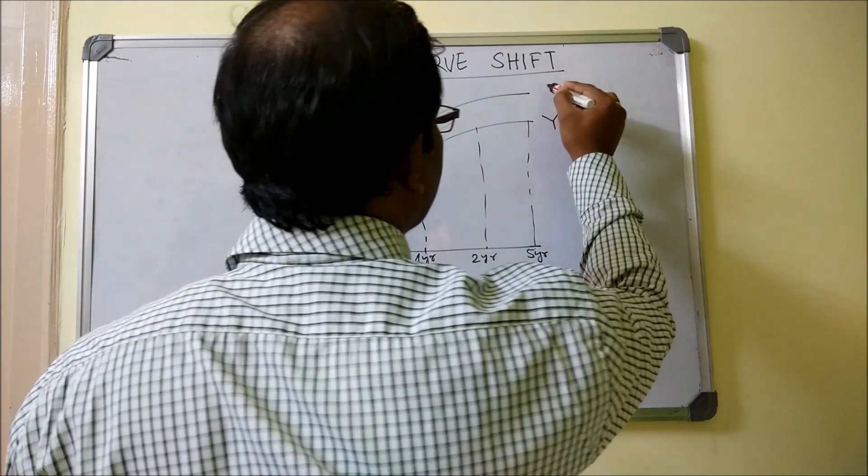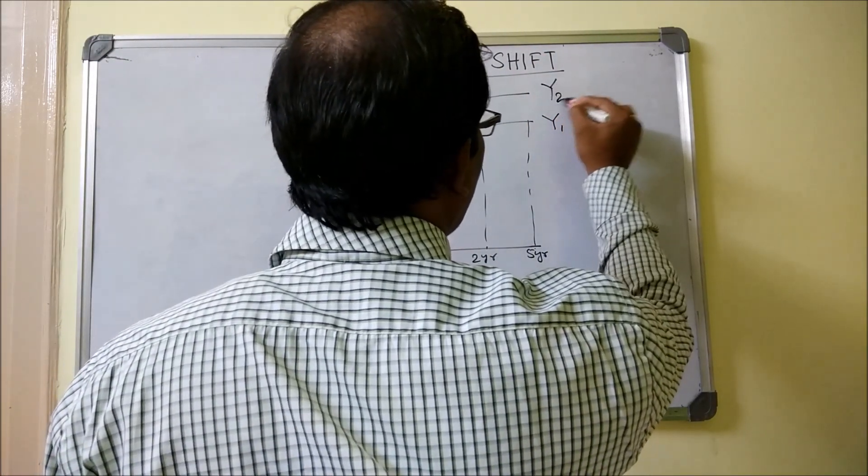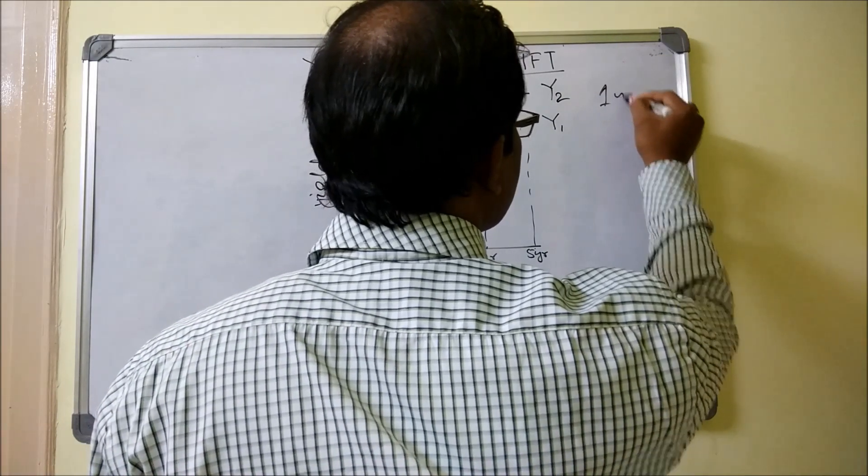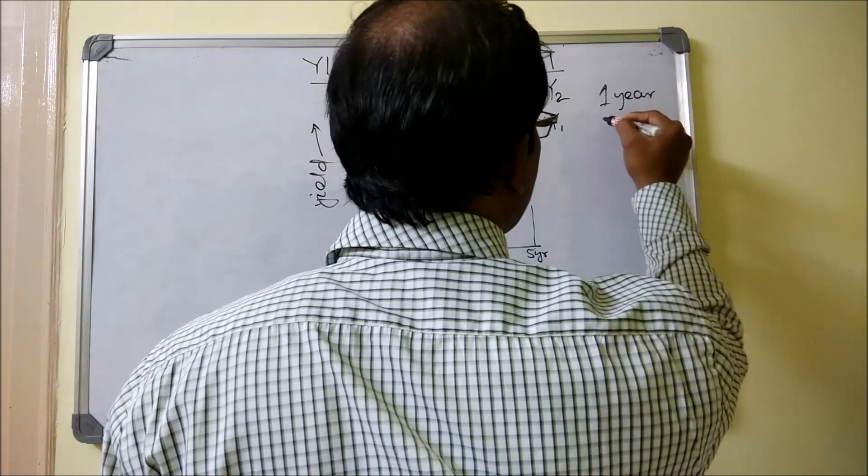I am drawing another yield curve. Let's say one year down the line we have something like this. So you have Y2 as the second yield curve. Let's say this is one year as our time horizon.